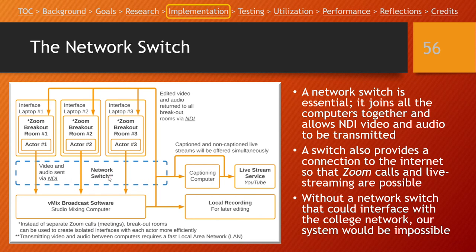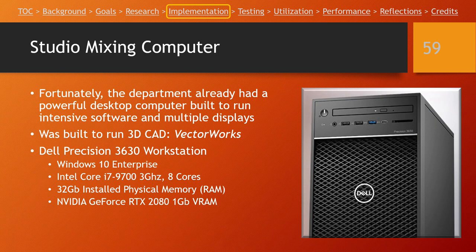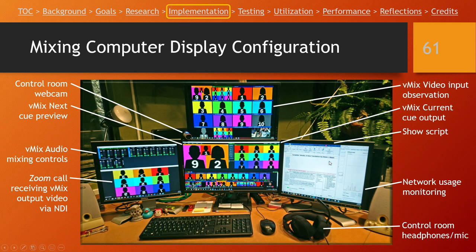We used a network switch provided by networking and telecom on campus to transmit all of our network data around between computers in our studio. Fortunately we already had a computer that could run the software and do all the mixing and editing. We decided to use a broadcast software called vMix to do all of our live video editing — this is just a look at what vMix looks like and some of the reasons why we chose that software. Our computer setup had our video editing software on the middle display, input video from our different actors up top, audio settings on the left, the script on the right, and network usage monitoring.